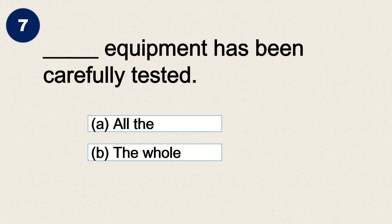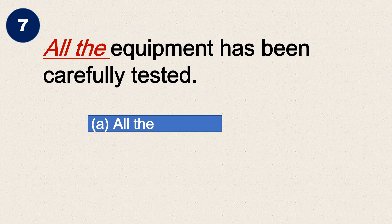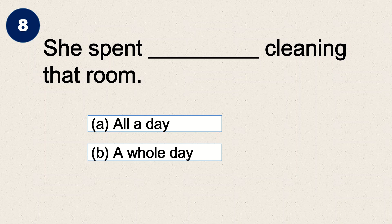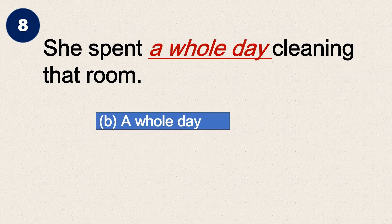The options for question seven are 'all the equipment' or 'the whole equipment.' The answer is 'all' — all the equipment has been carefully tested. Question eight: she spent blank cleaning that room — 'all a day' or 'a whole day'? The answer is 'a whole day' — she spent a whole day cleaning that room.